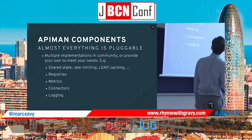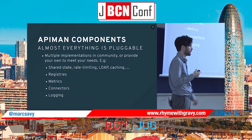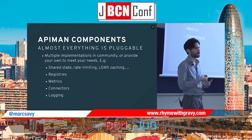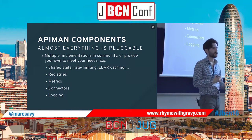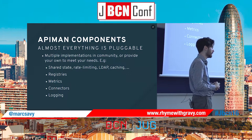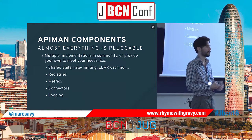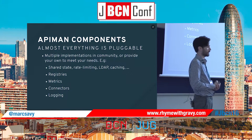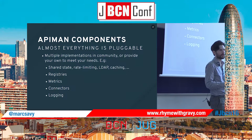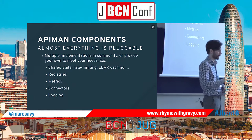A slightly more advanced topic: API Man components. Most of what you see in API Man's underlying infrastructure is pluggable. Different people want different types of behavior — they may want an eventually consistent data store, or a strongly consistent one, or different types of rate limiting. We have a bunch of different components available: InfiniSpan rate limiting, Elasticsearch rate limiting, in-memory rate limiting, but you can implement your own. Some people have done that for particular behavioral requirements. We also have components for registries, for pushing data into metric stores, connectors, logging, and so on.